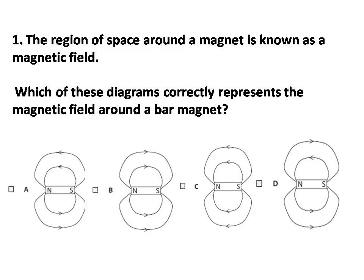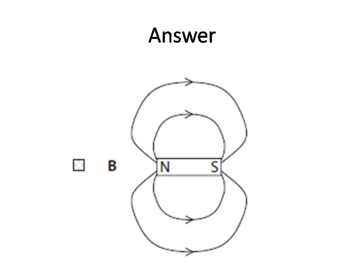Question number one. The region of space around a magnet is known as a magnetic field. Which of these diagrams correctly represents the magnetic field around a bar magnet? Answer is option B. Magnetic field lines always travel from North Pole to South Pole.